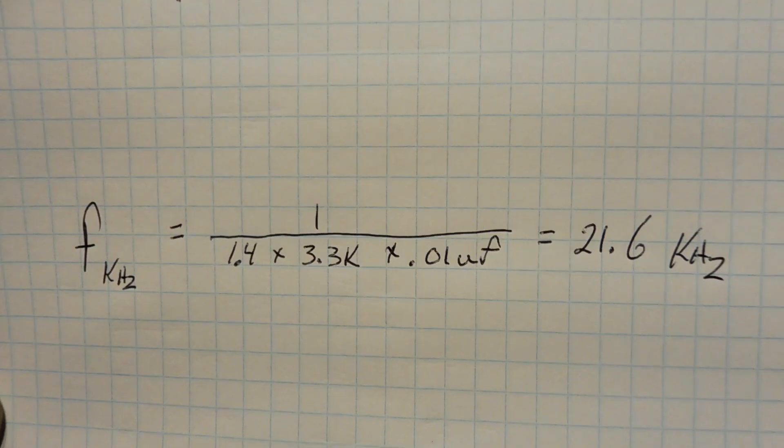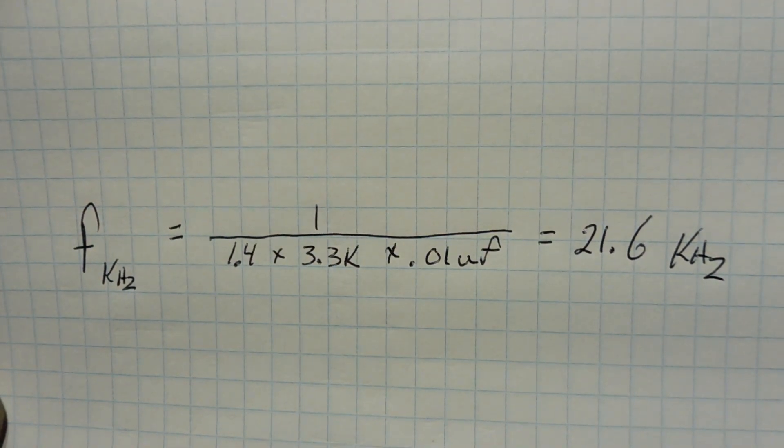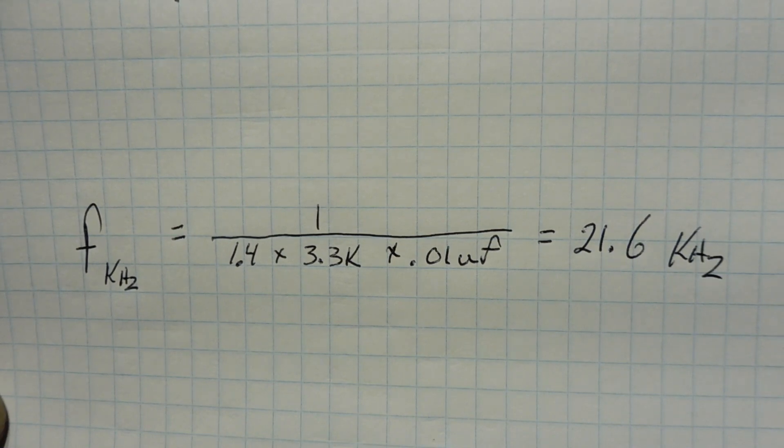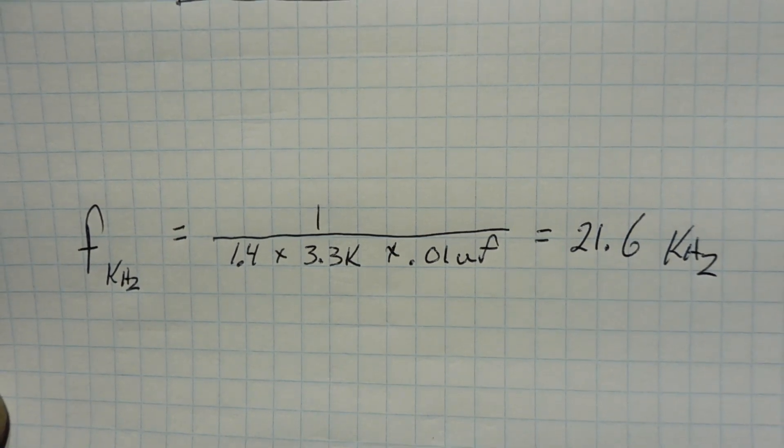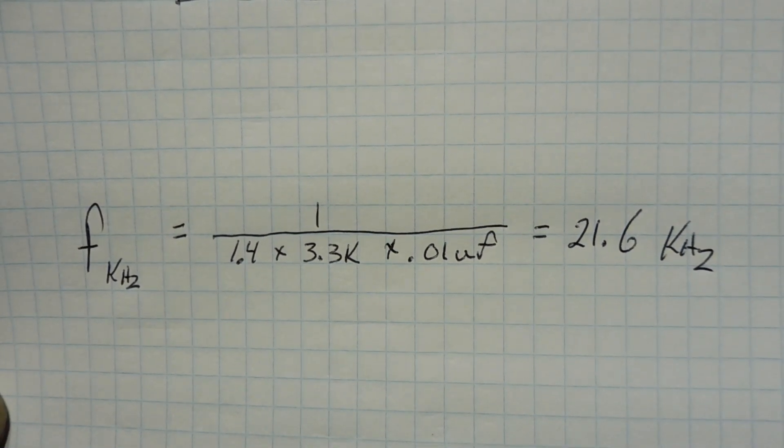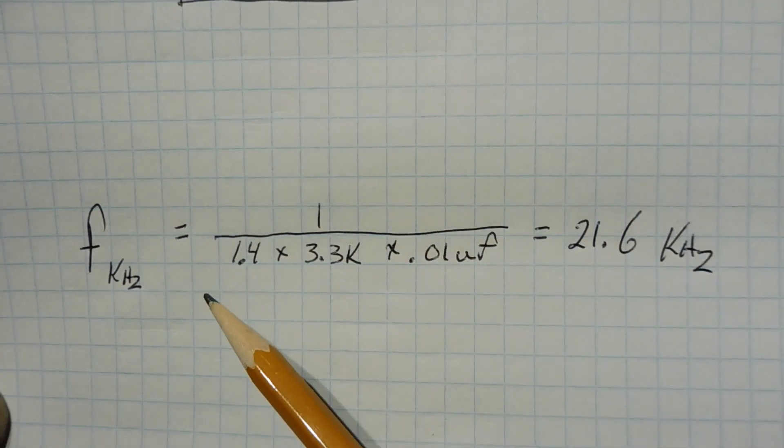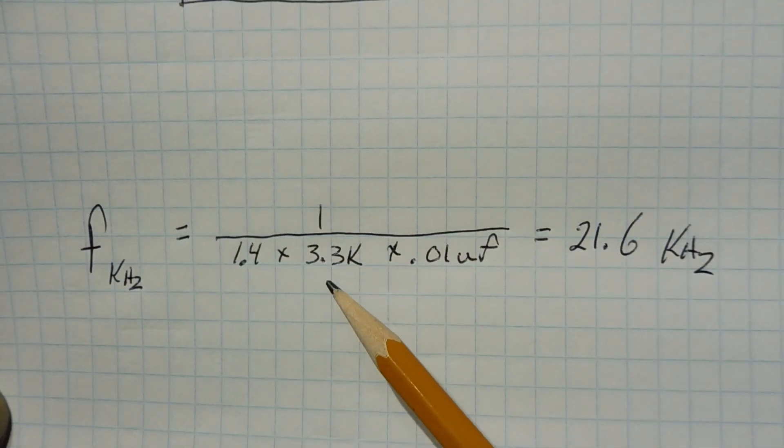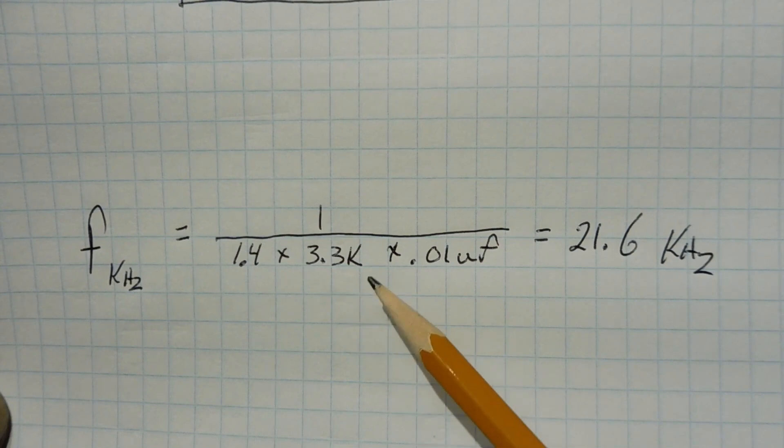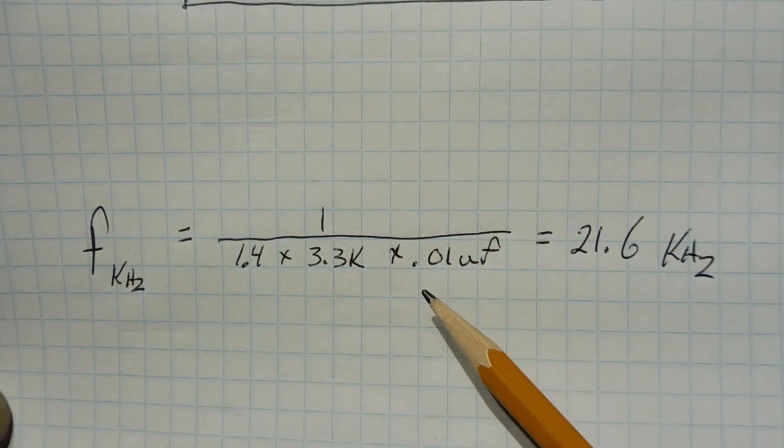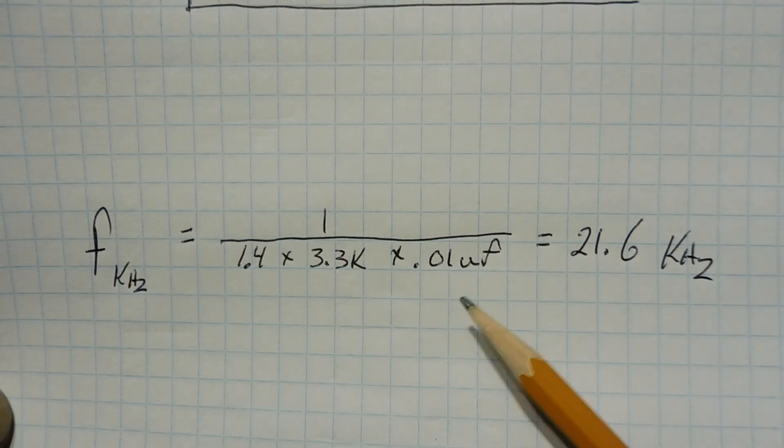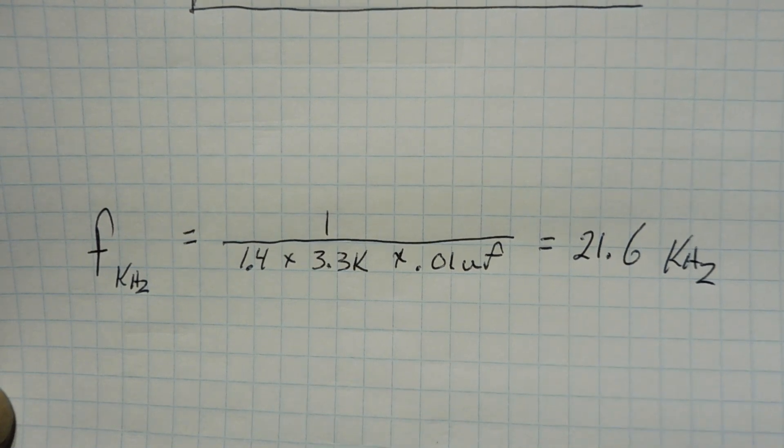Okay, here's the formula to calculate the output frequency of our op-amp square wave generator. So the frequency in kilohertz equals 1 over 1.4 times the resistor in kilo ohms, so it's 3.3, times the capacitor in microfarads, so it's 0.01, and that will equal 21.6 kilohertz.